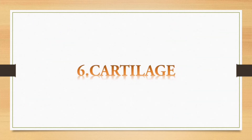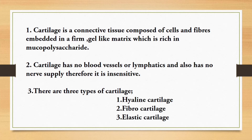Sixth question: cartilage. Cartilage is a connective tissue composed of cells and fibers embedded in a firm gel-like matrix which is rich in mucopolysaccharides. Cartilage has no blood vessels or lymphatics and also has no nerve supply, therefore it is insensitive. There are three types of cartilages: hyaline cartilage, fibrocartilage, and elastic cartilage.